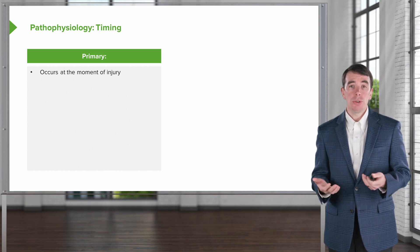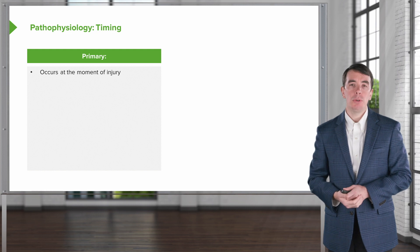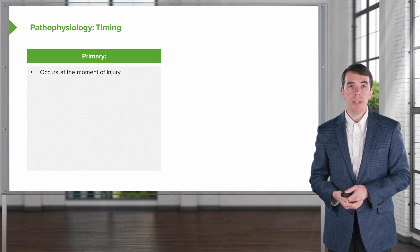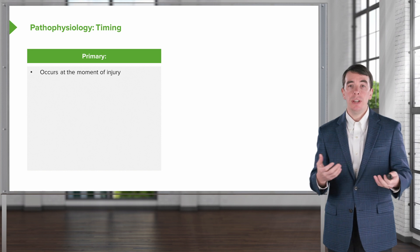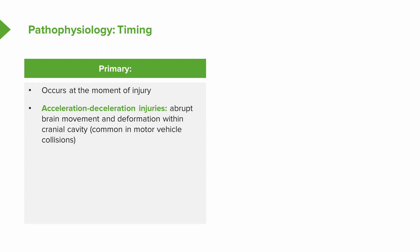In terms of the initial insult — the primary injury — this occurs at the moment of the injury, at the moment of the fall or as a result of the impact from the motor vehicle accident or from the sports-related hit or injury. We can have acceleration-deceleration injuries, which are abrupt movements with deformation of the brain and the cranial cavity that result in traumatic injury to the brain. We can also see coup-contrecoup injuries, where the brain initially sustains an impact resulting in a coup injury and then is tossed backwards, causing injury on the opposite side — a contrecoup injury.